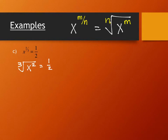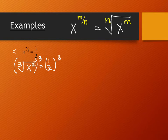To undo a cube root, you cube both sides — just like squaring undoes a square root. Cubing both sides: the cube root cancels on the left, leaving x squared. On the right, one-half cubed gives 1 over 8. Now we take the square root of both sides to undo the square. The square root of 1 over 8 requires simplification.